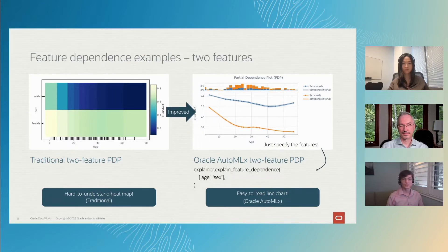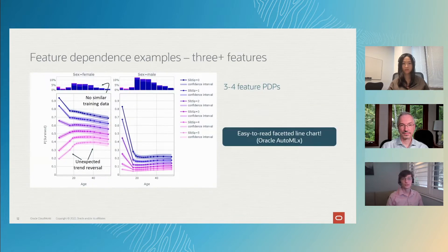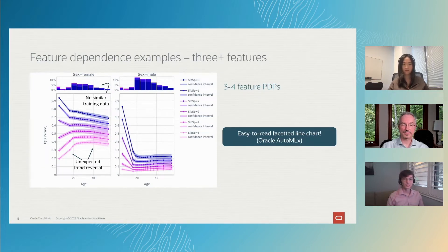All you have to do is ask us to explain the age and sex features — the two most important features to the model. We can even go up to three or four features. These figures get quite a bit more detailed, but you can get some very interesting information. For example, this pink line shows that women with a large number of siblings or spouses on board are actually predicted to be more likely to survive if they're older.